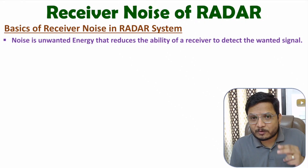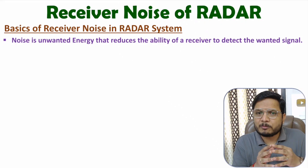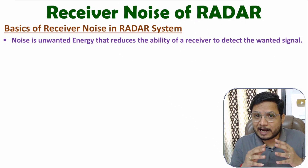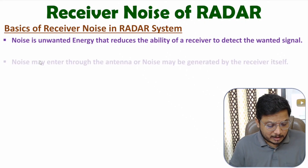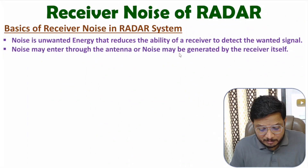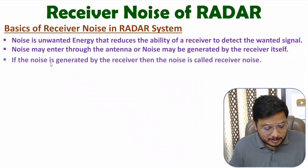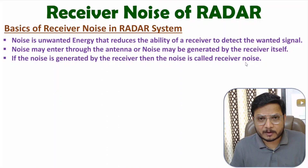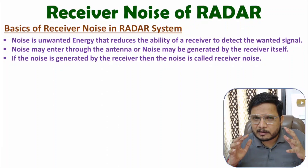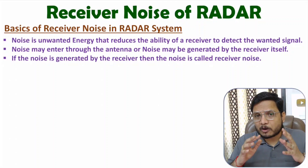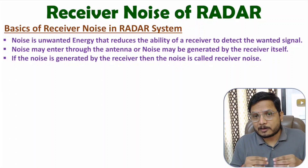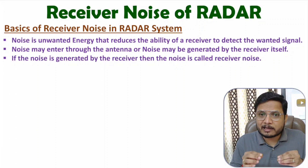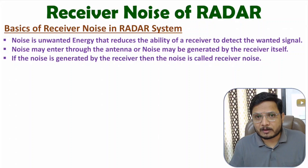Based on the received signal only, we identify the range of the radar. So noise should be as minimum as possible. Noise is unwanted energy that may be added at the side of the antenna or may be added at the side of the receiver. So noise may enter through the antenna or may be generated by the receiver itself. If noise is generated by the receiver, that is referred to as receiver noise. But always remember, noise is not only there because of the receiver — noise is also there because of temperature. As you increase temperature, you will observe thermal noise automatically getting added in the receiver system. That noise due to temperature is referred to as thermal noise or Johnson noise.